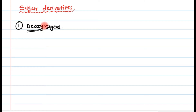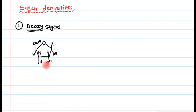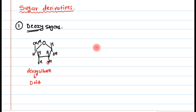Deoxy sugars are sugars which have had their oxygen removed. For example, if you draw the structure of ribose, this is the structure of D-ribose with OH groups on the second and third carbons and a CH2OH group. Now if we remove oxygen from the second carbon, it becomes deoxyribose — a derived deoxy sugar. This deoxyribose is a very important constituent of DNA.